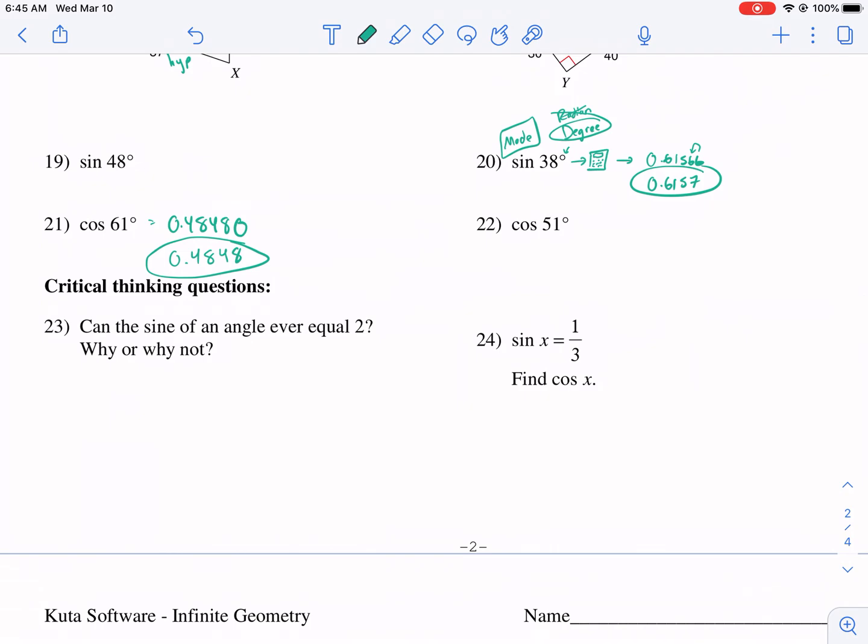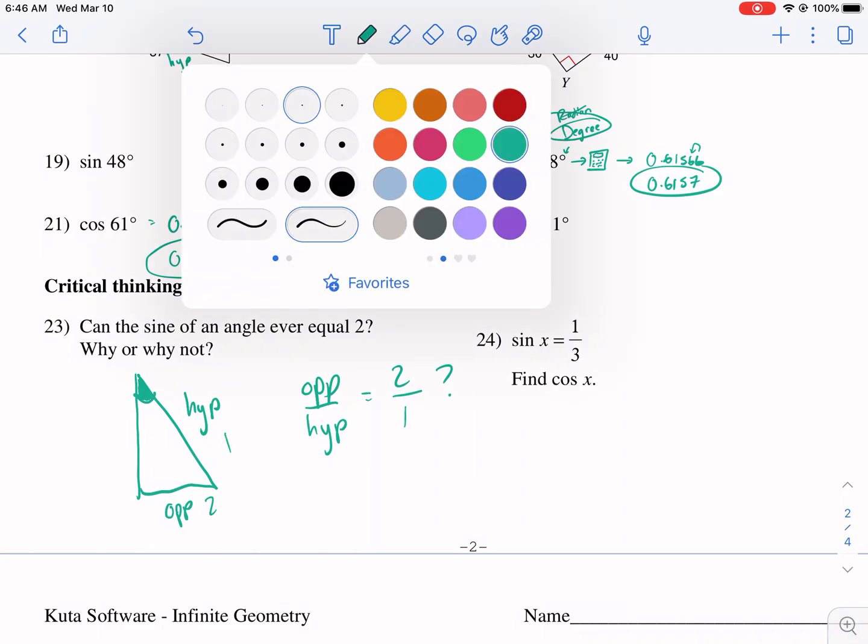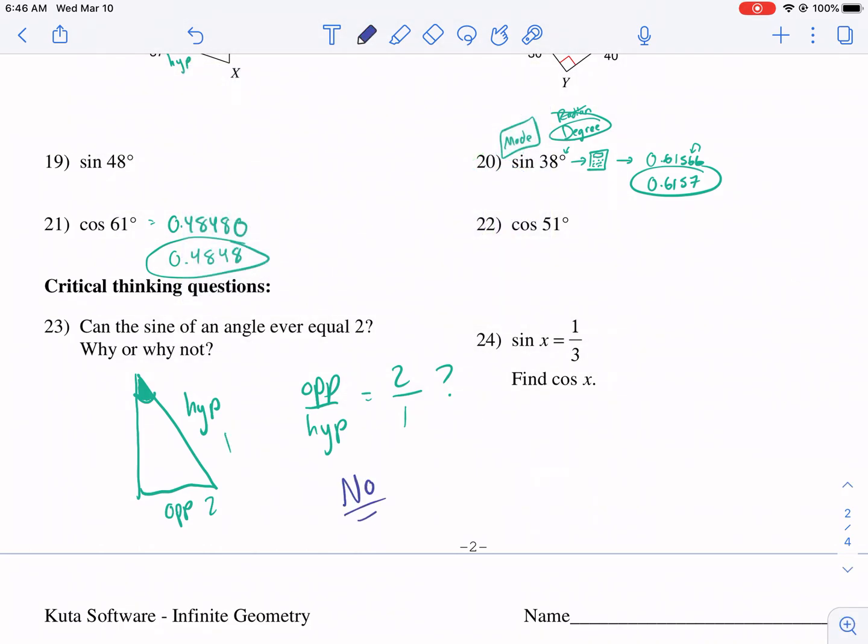Can the sine of an angle ever equal 2? Why or why not? So let's think about this for a second. Remember that if we have our reference angle here, and this is our opposite side. Let me just call this in. And this is our hypotenuse. Could the opposite over the hypotenuse equal 2 over 1? Well, can the opposite side be bigger than the hypotenuse? I think that's the question. The answer is no. It cannot.